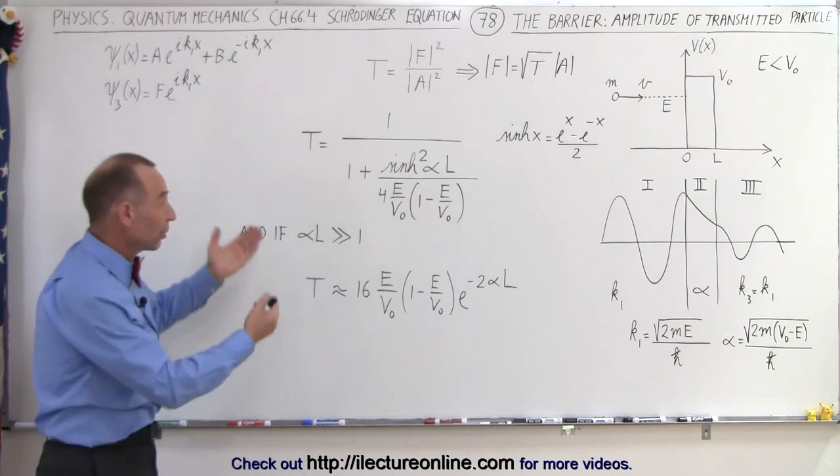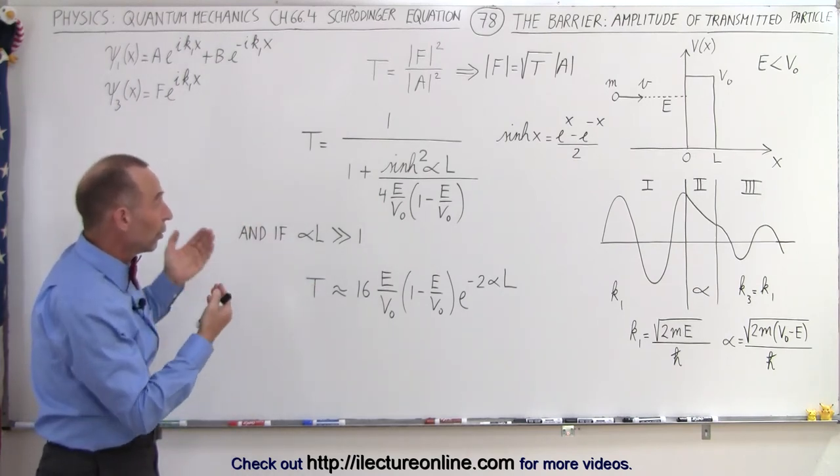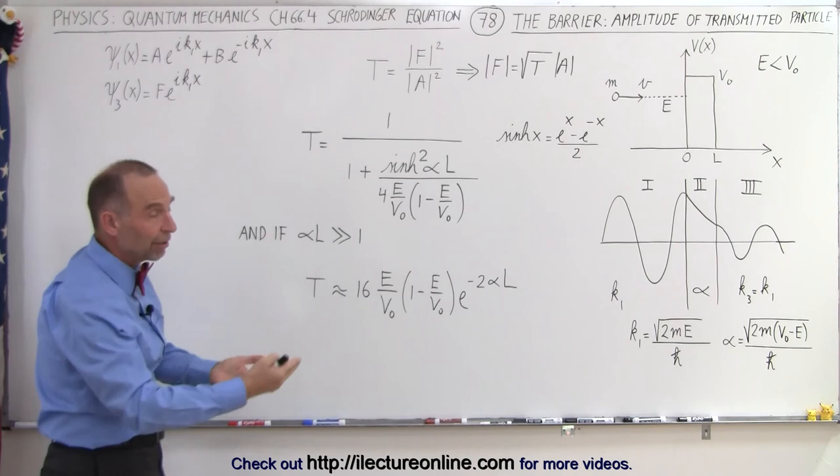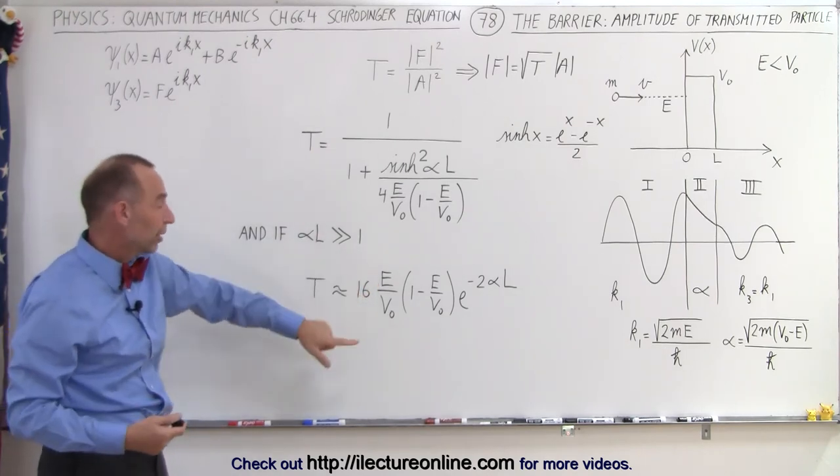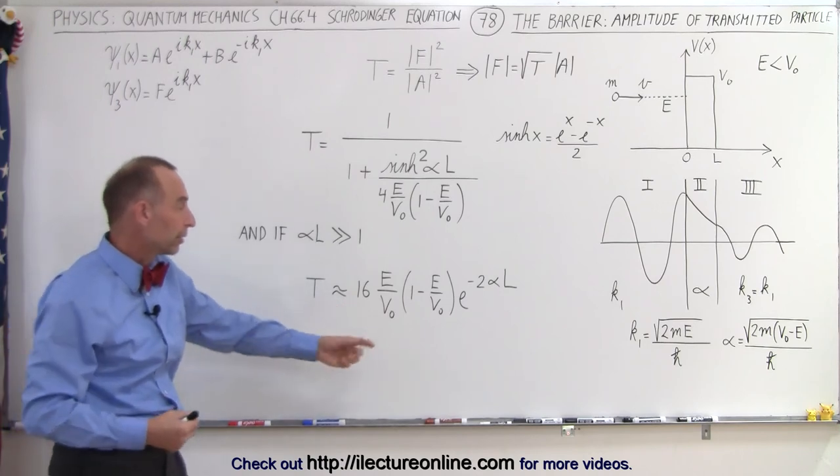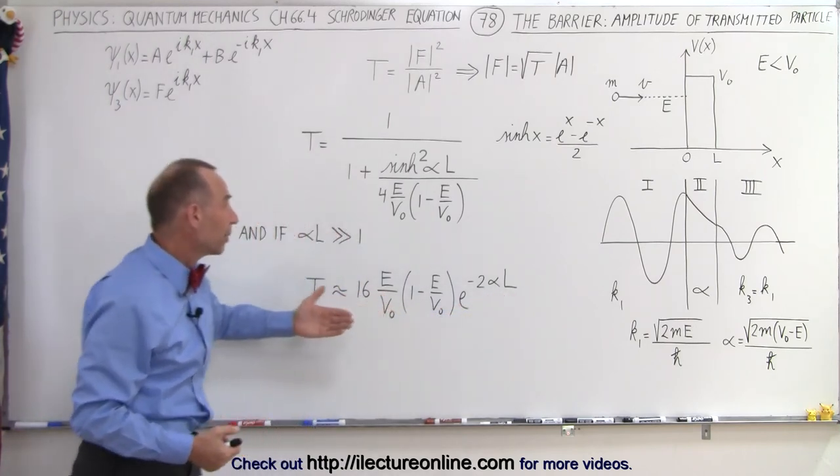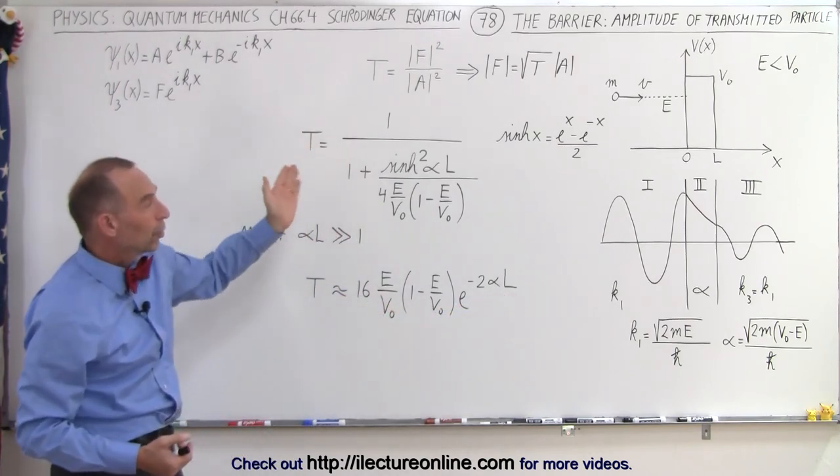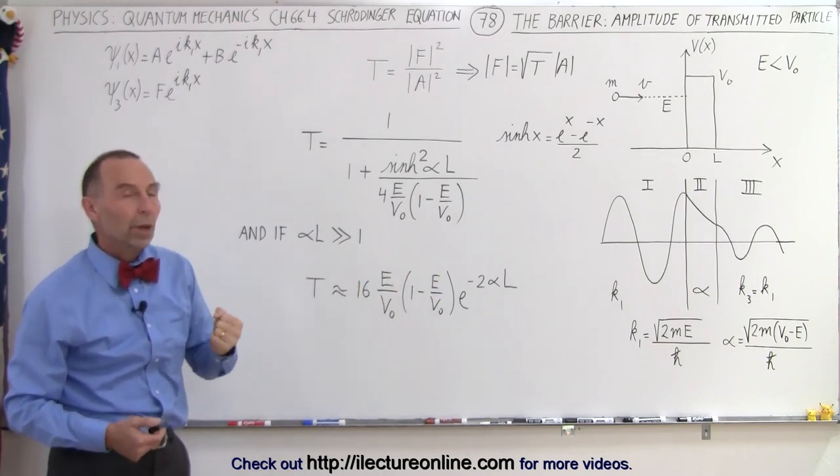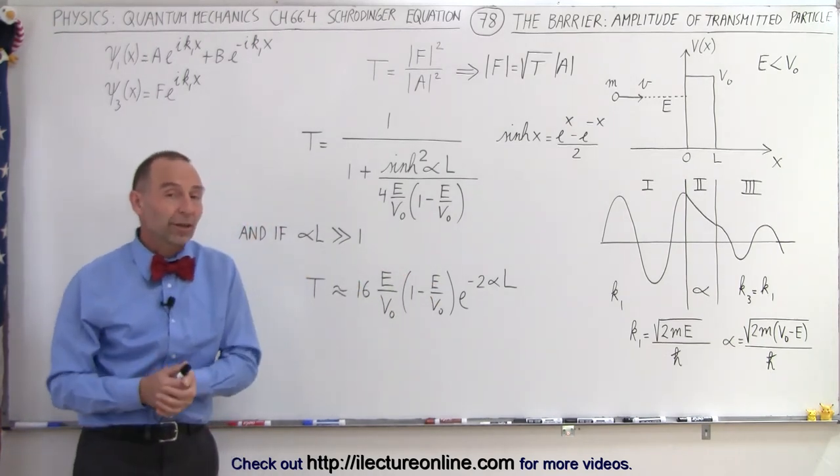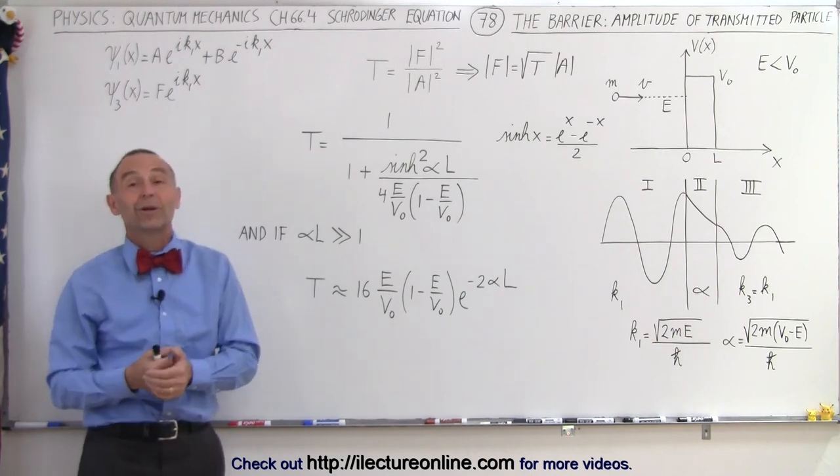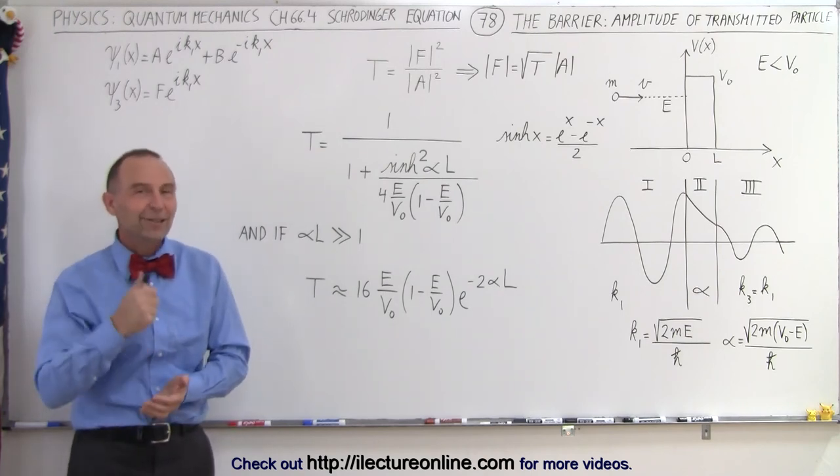But at least now you have some equations you can start working with. You should be able to plug in some values given an E and a V, for example, given a certain energy for the particle and a certain potential for the barrier, and width of the barrier you should be able to calculate what the amplitude on the other side of the barrier will be relative to the amplitude in region 1. And so that's where we start. I'll show you some more details of where these equations actually came from in the videos to come.